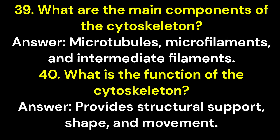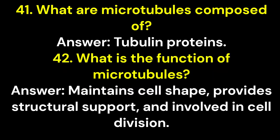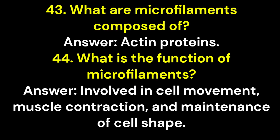39. What are the main components of the cytoskeleton? Answer: Microtubules, microfilaments, and intermediate filaments. 40. What is the function of the cytoskeleton? Answer: Provides structural support, shape, and movement. 41. What are microtubules composed of? Answer: Tubulin proteins. 42. What is the function of microtubules? Answer: Maintains cell shape, provides structural support, and is involved in cell division.